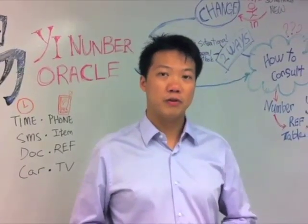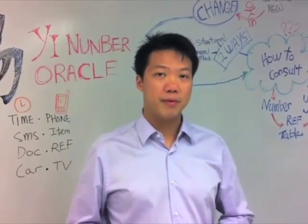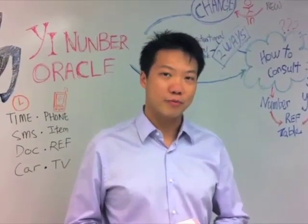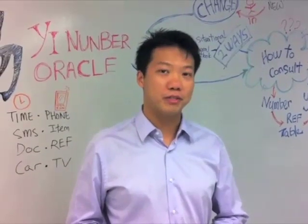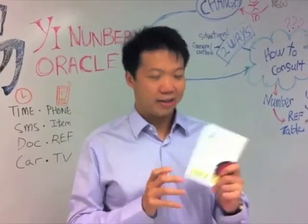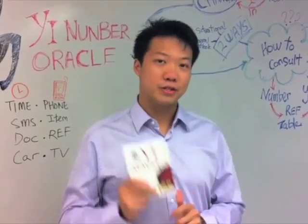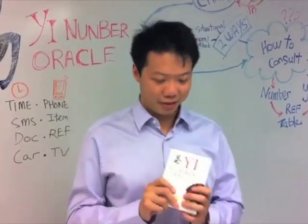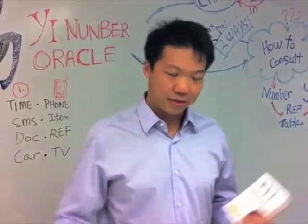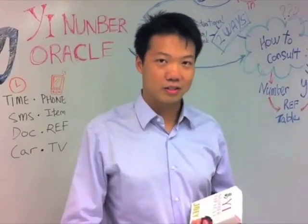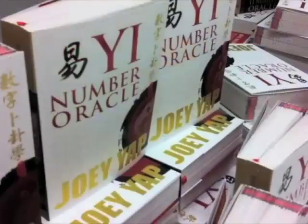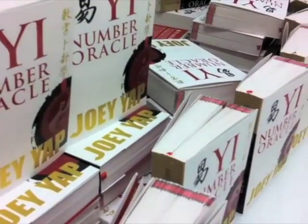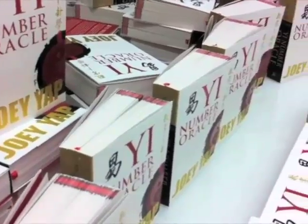Hey guys, Joey Yap here, founder of the Mastery Academy and author of more than 75 books on Chinese metaphysics. Good news — the Geek Number Oracle is out and I'm going to sign all of these for you guys today. For those of you who have pre-ordered, the books are on their way.